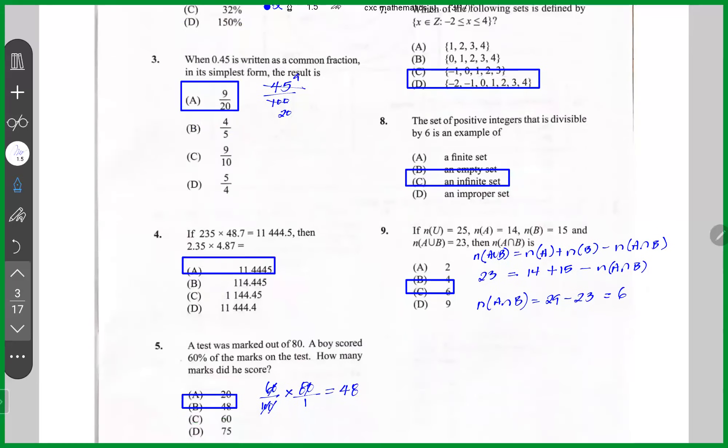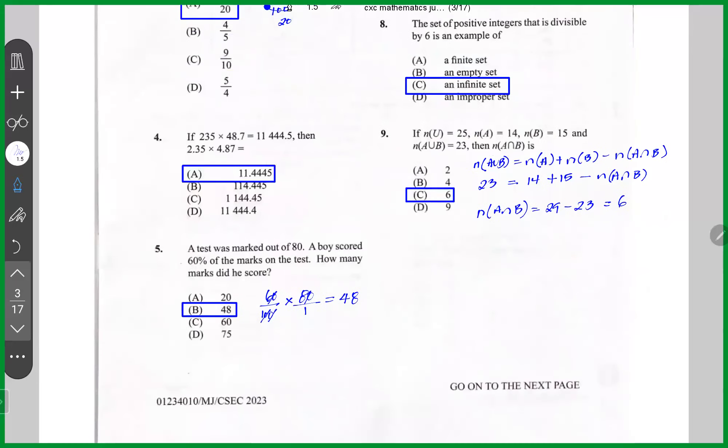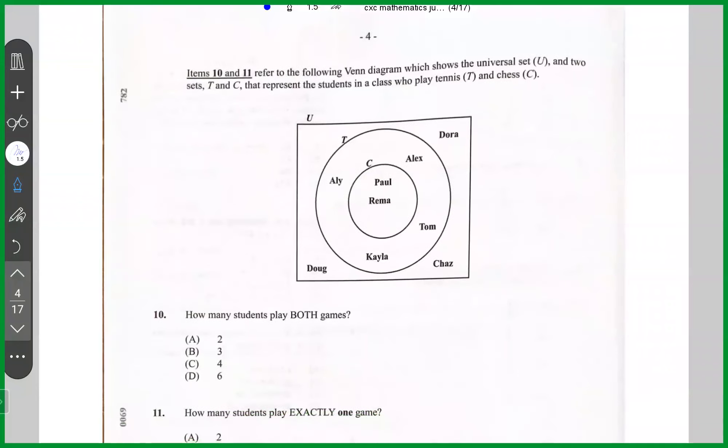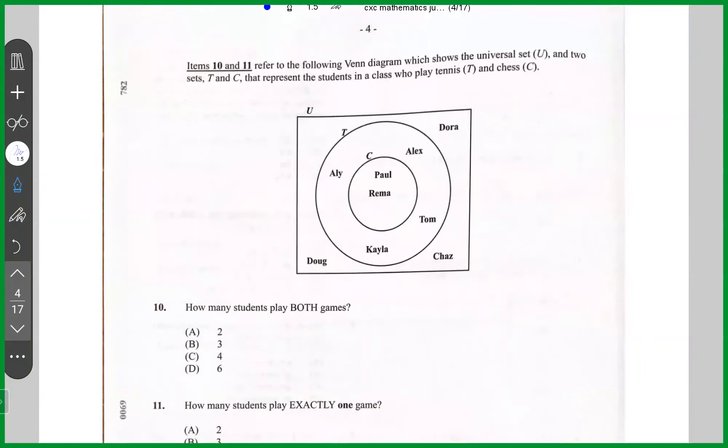All right. Turning the page. Question number 10, items 10 and 11 refer to the following Venn diagram, which shows the universal set U and two sets T and C that represents the students in a class who play tennis and chess. How many students play both? Well, here chess is a subset of tennis. It means that every student who played chess also plays tennis. Paul and Rima play chess. So they also play tennis. So it's two students that play both sports or both games.